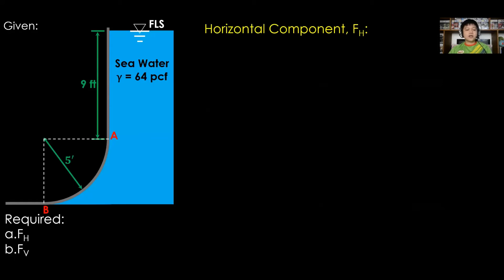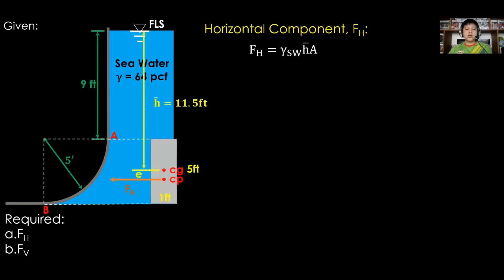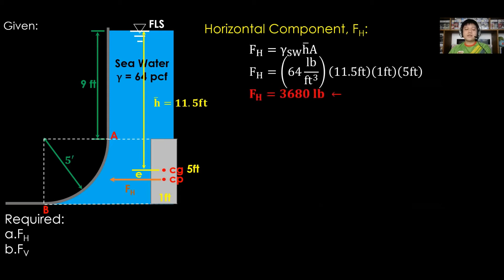For the horizontal component F sub H, consider the projected surface. F sub H is equal to gamma of seawater times h-bar times A for homogenous fluid. Substituting gamma of seawater as 64 pounds per cubic foot, h-bar as 11.5 feet, and the projected surface area as 1 foot by 5 feet, therefore F sub H is equal to 3,680 pounds.